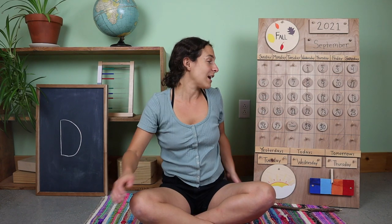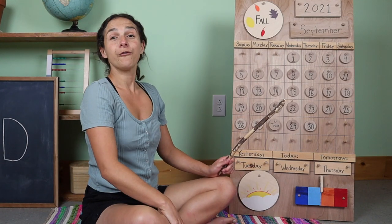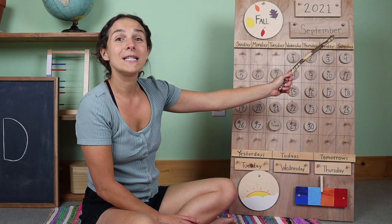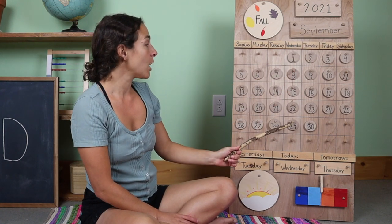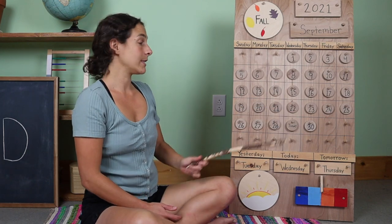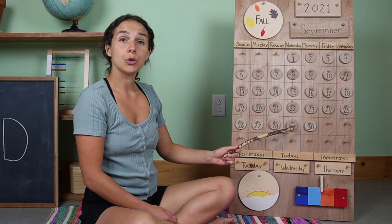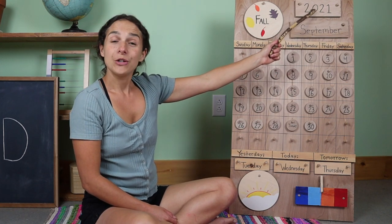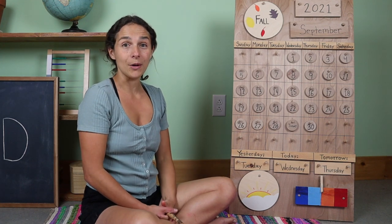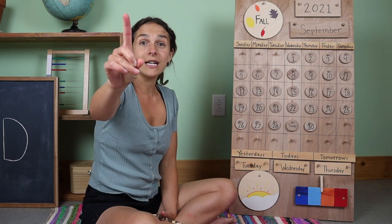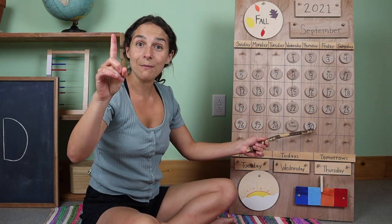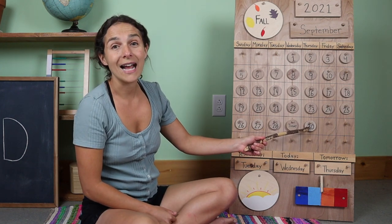And now we can move on to the calendar and weather chart. First, let's start off with the month, which is right up here. Do you know what the month is? September. Today is September 29th. Let's move the chip over from yesterday. Yesterday was September 28th, and today is September 29th. And right up here we have the year 2021. Let's see how many days are left in the month of September. After today, we only have one more day left in the month of September. Tomorrow is the last day of September.